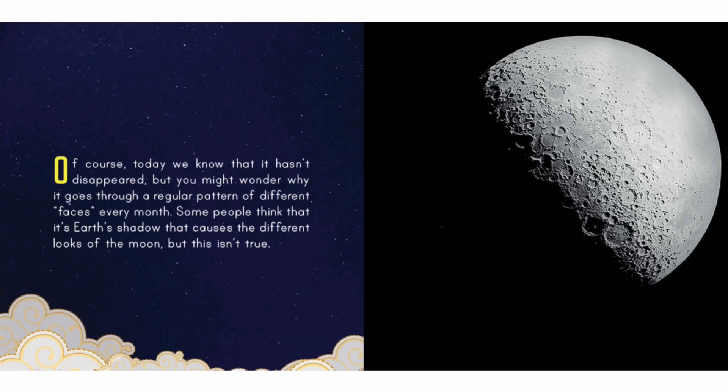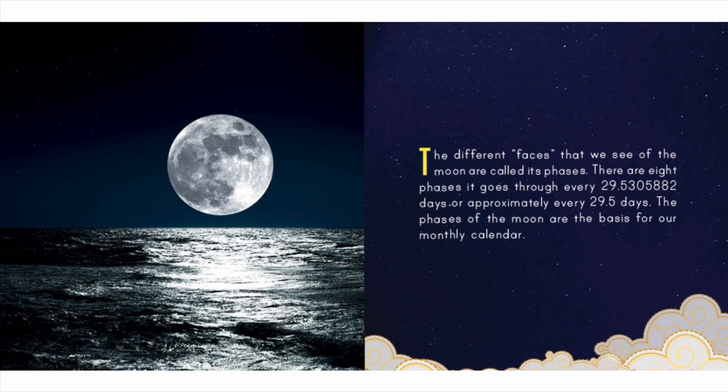Of course today we know that it hasn't disappeared, but you might wonder why it goes through a regular pattern of different faces every month. Some people think it's earth's shadow that causes the different looks of the moon, but this isn't true. The different faces we see of the moon are called its phases — there are eight phases it goes through every 29.5305882 days, or approximately every 29.5 days.